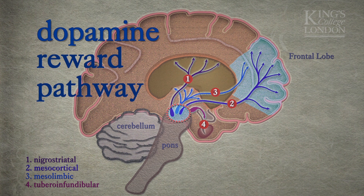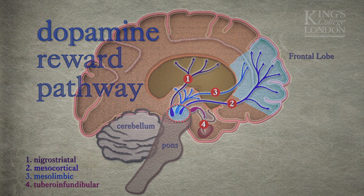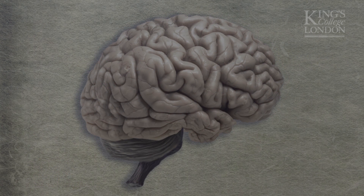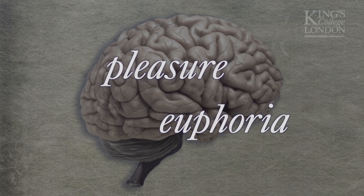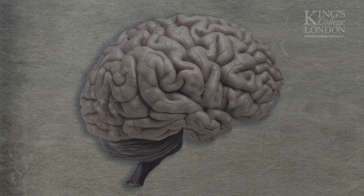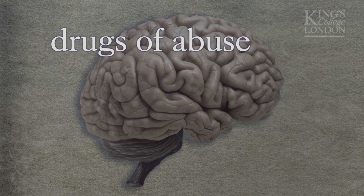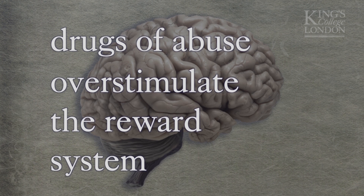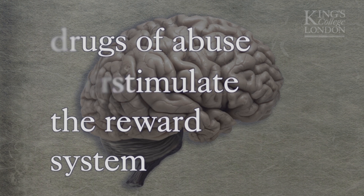This is the pathway that usually becomes activated when we do something that's important for our survival — something like eating, spending time with our children, spending time with our loved ones and so on. By engaging in these behaviours, we're rewarded with feelings of pleasure and euphoria. We feel good, so we want to do it again. What drugs of abuse do so very well is that they overstimulate this reward system, and this makes us want to take drugs again and again.